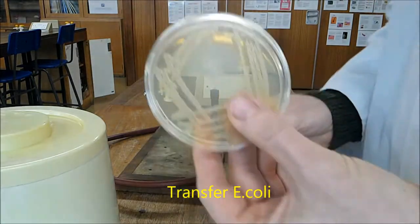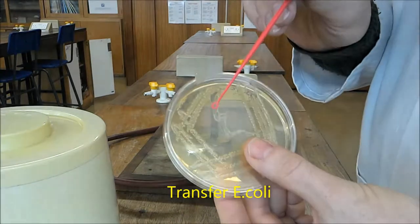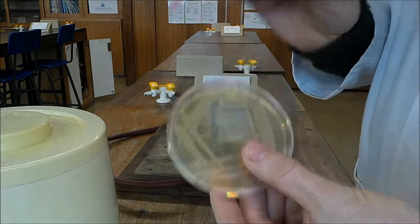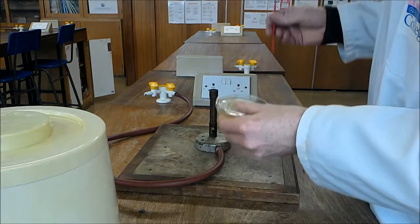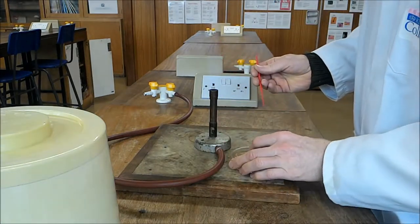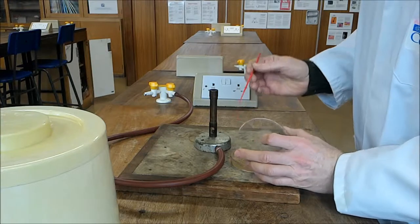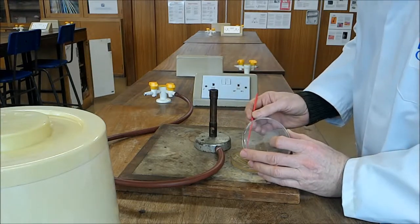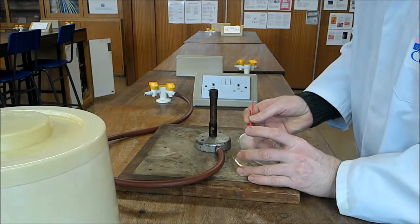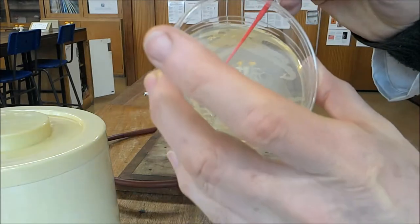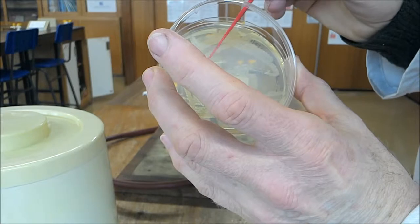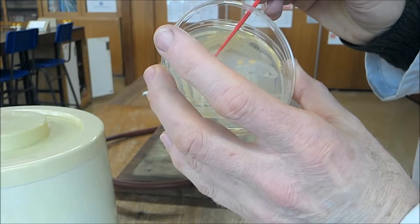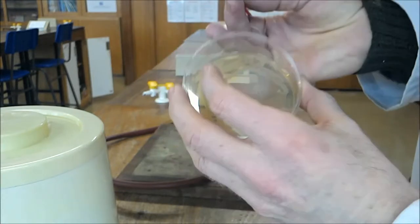Okay, so what we're going to do is take some E. coli, go on the plate here, so working close to the Bunsen burner, take a sterile loop, and we're going to go and collect a little bit of the E. coli. Here we are.